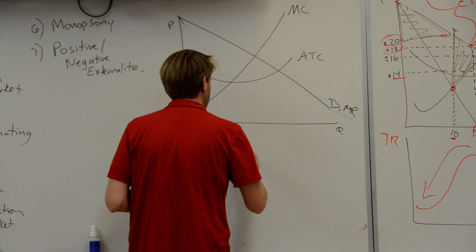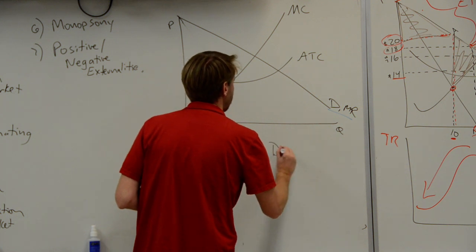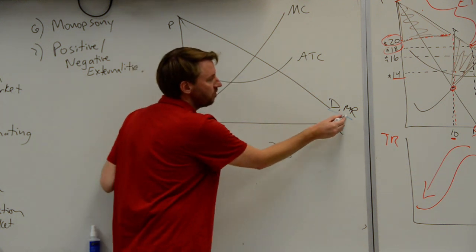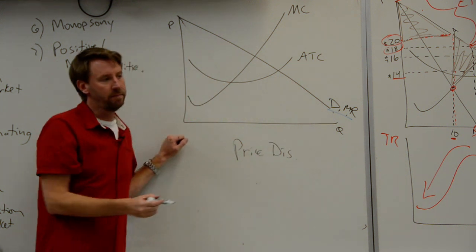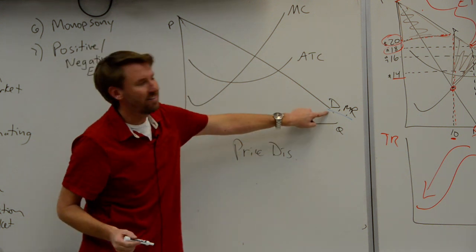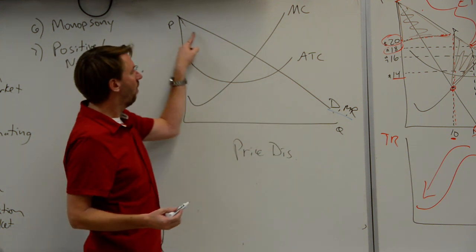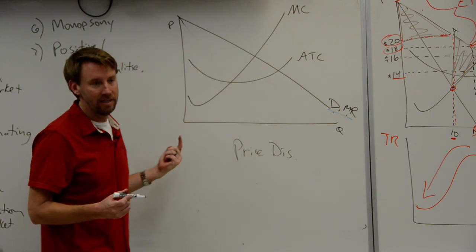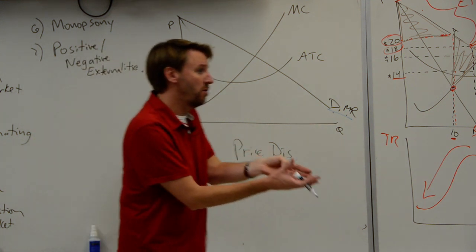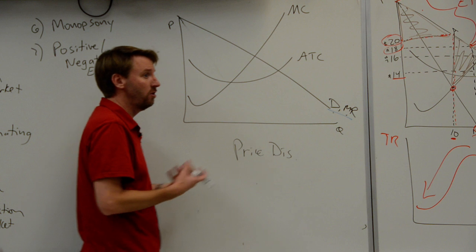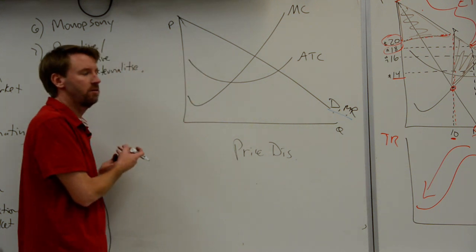A price discriminating monopoly will always have marginal revenue and demand on the same line. That's because the price discriminator, when they lower the price, lowers the price not just for new customers, not just to attract new buyers, but for previous buyers as well.